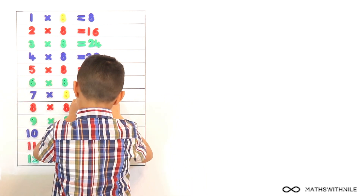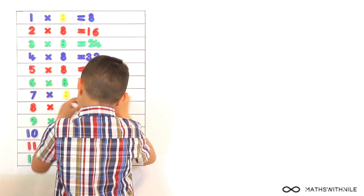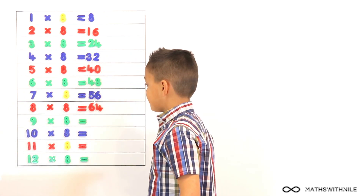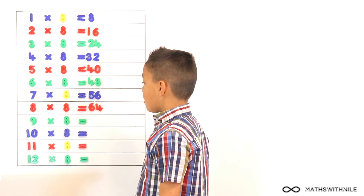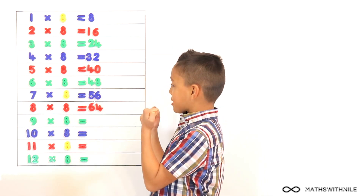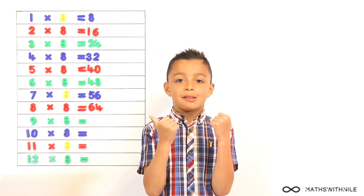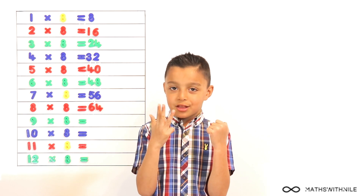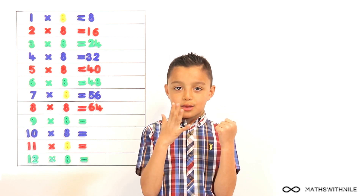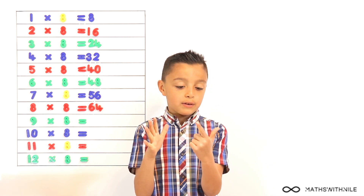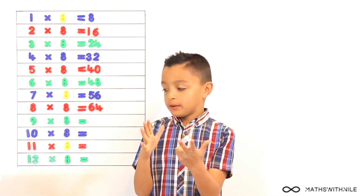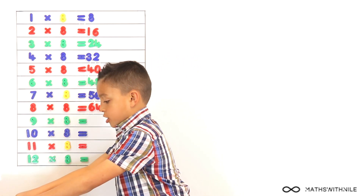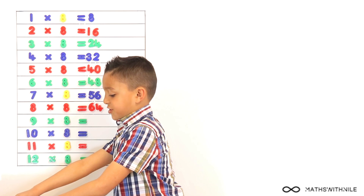If you have to yawn, you'll have to yawn. Yeah. What about 9 times 8? 64, 65, 66, 67, 68, 69, 70, 71, 72. Okay, 72. Brilliant. 72.